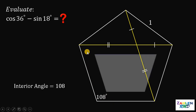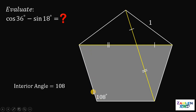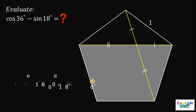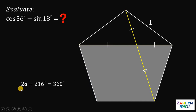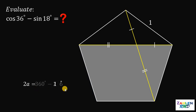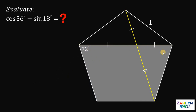Let's consider this trapezoid. We know two angles are each 108 degrees. Let the two remaining angles each be angle A. Then A plus A plus 108 plus 108 equals 360 degrees. So 2A plus 216 equals 360, giving 2A equals 144, and A equals 72. Therefore, the two remaining angles are each 72 degrees.